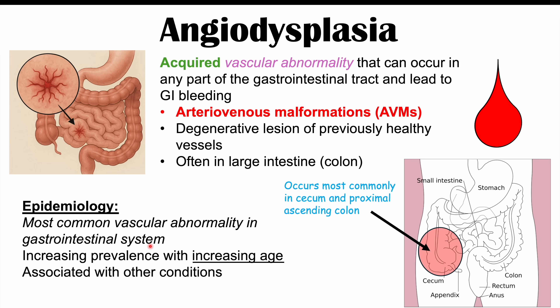Angiodysplasia is associated with other conditions, including von Willebrand's disease and aortic stenosis. It can also be seen in end-stage renal disease patients. So when a patient has severe aortic stenosis or end-stage renal disease and presents with gastrointestinal bleeding, angiodysplasia should be considered.